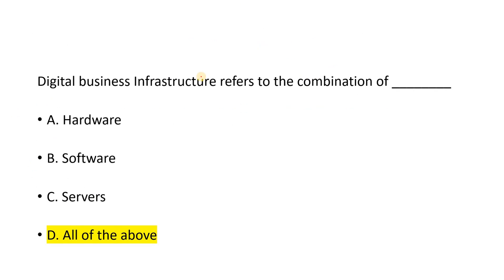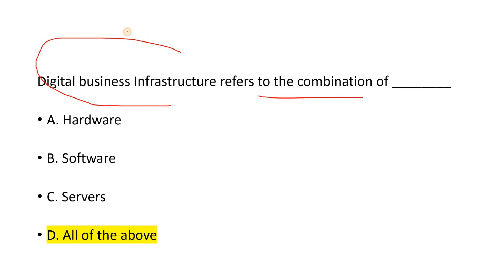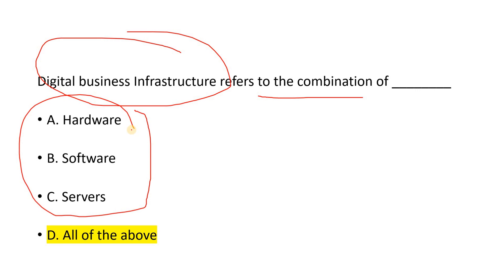Digital Business Infrastructure refers to the combination of all required elements. If we need to create any environment, then we require all these things together.